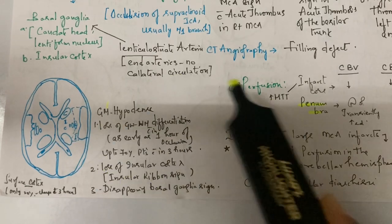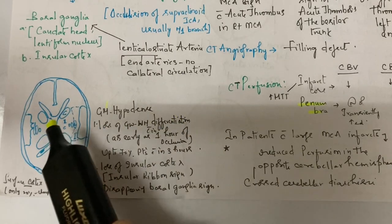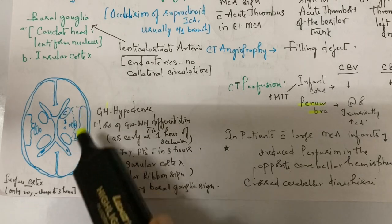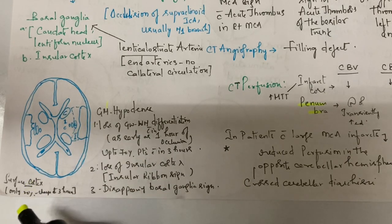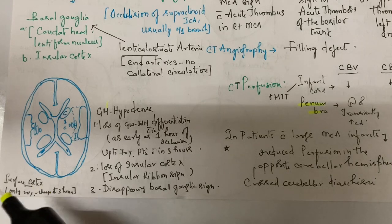Just mention these signs and draw a diagram; you'll get full marks. The surface cortex normally has collateral circulation. Only 20% of cases show findings within three hours; otherwise changes appear late.